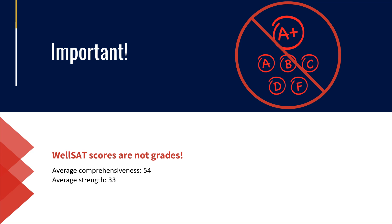It is important to remember not to treat comprehensiveness and strength scores as grades. There are no passing or failing scores, and you should not communicate your results as a letter grade. In our research with a sample of 50 districts from across the country, the average comprehensiveness score was 54 out of 100, and the average strength score was 33 out of 100.